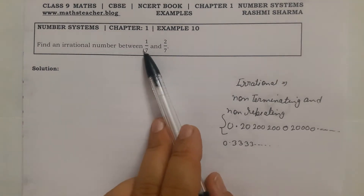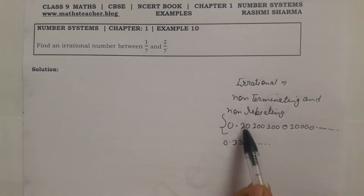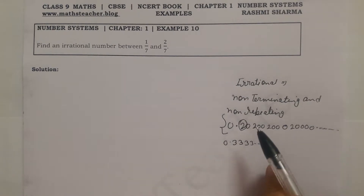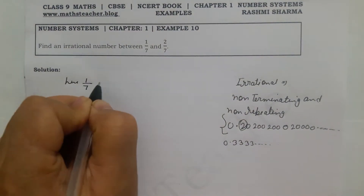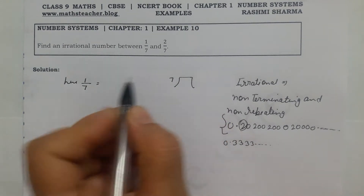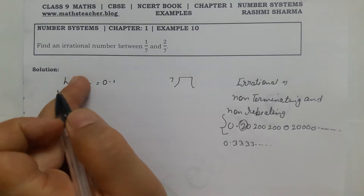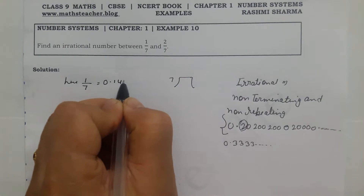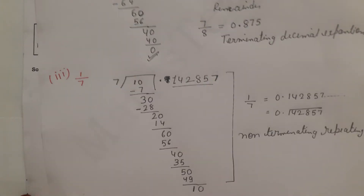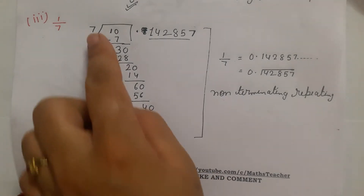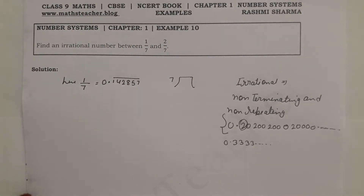So when you have rational numbers like 1/7 and 2/7, what you do is find their decimal expansion. You can see the starting digits and then write any non-repeating continuation. Here, 1/7 equals 0.142857 repeating bar — we calculated this in a previous example on decimal expansion.